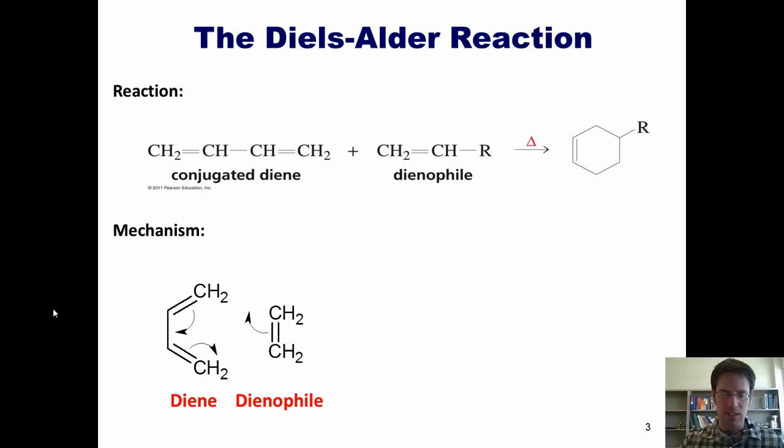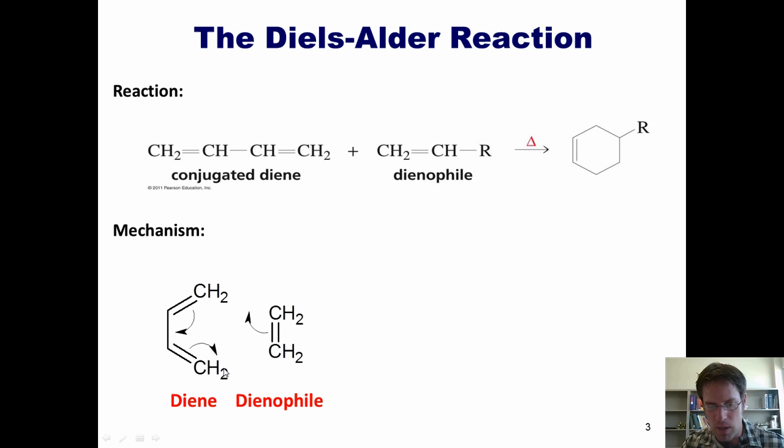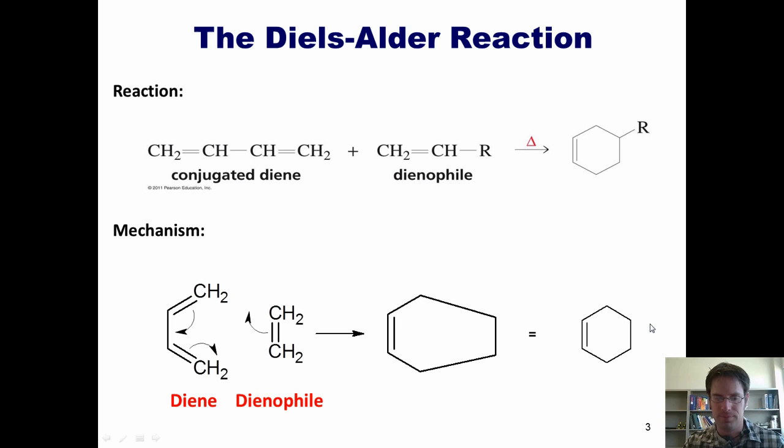You can essentially think of the mechanism as the opening and closing of three doors on three separate hinges. These pi electrons swing out and close here, forming a single bond between two carbons. This door swings over here to form a double bond between two carbons. And this door swings out and forms a single bond between two more carbons. That forms this product, which when redrawn is a cyclohexene.